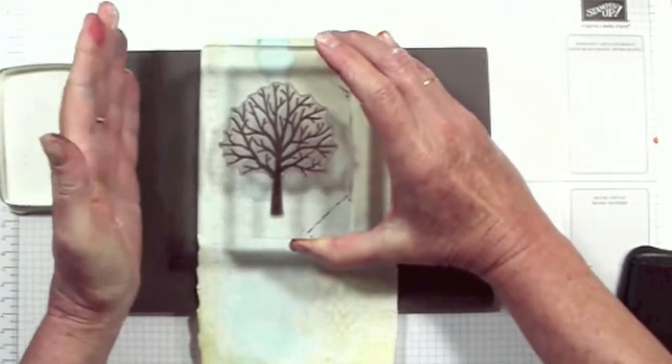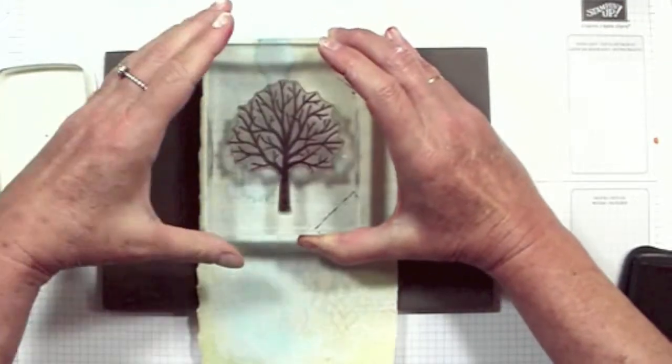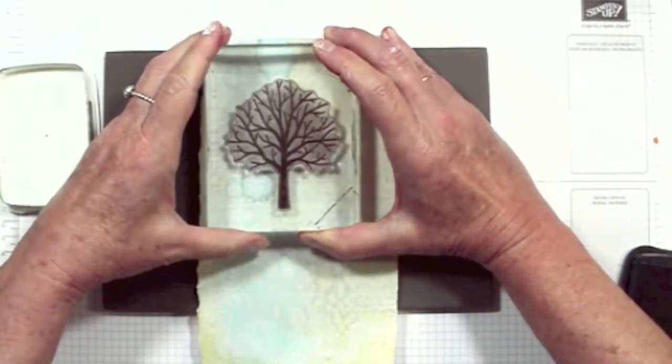And when we stamp we're going to stamp over to the left hand side, but remember we've got to add leaves, so not quite right at the edge.